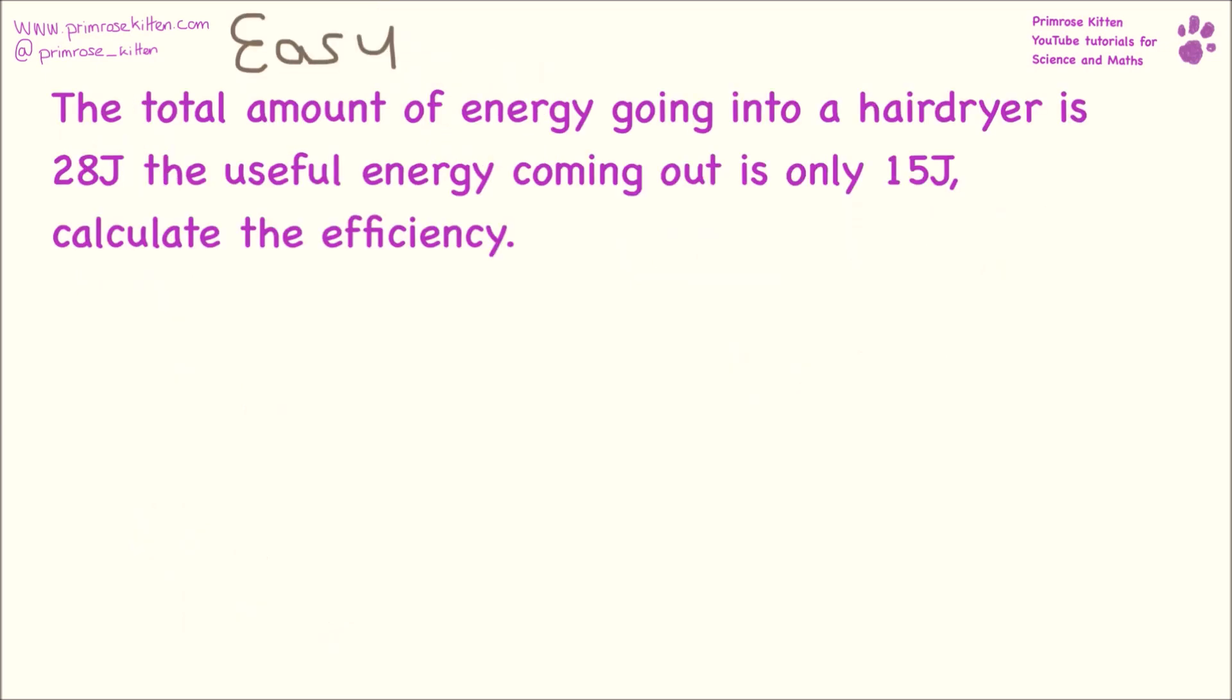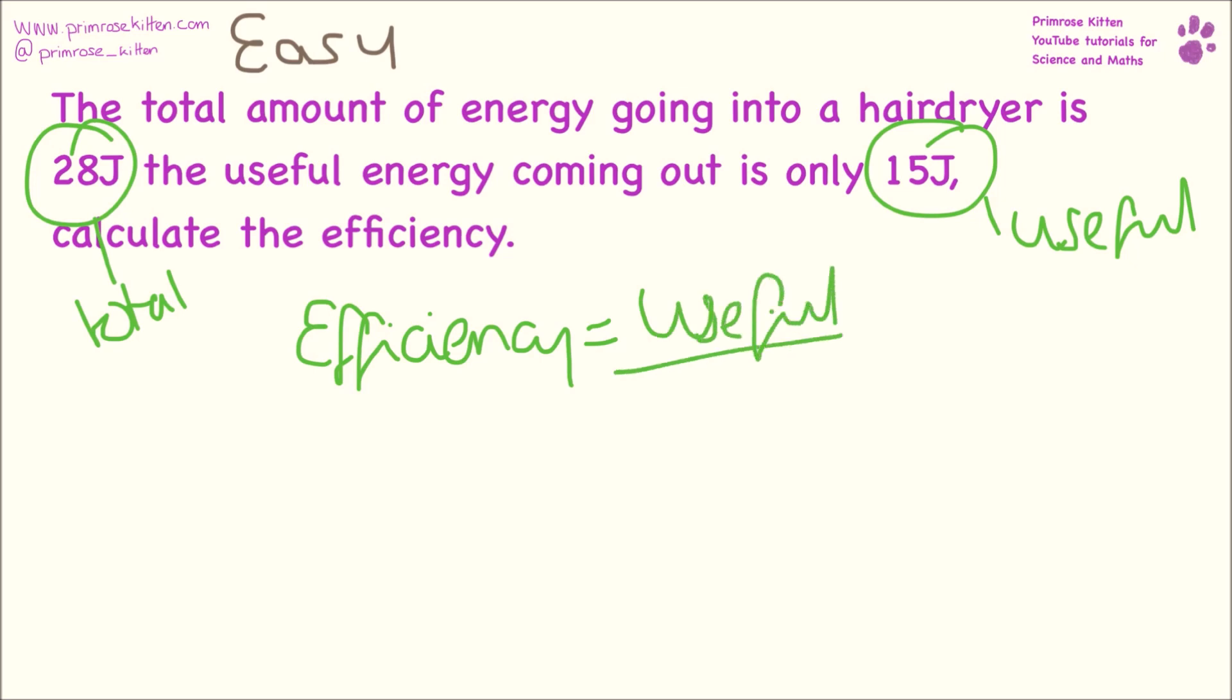For these examples, I'm going to follow my rules for answering math questions. If you're not familiar with those, check out my video on how to answer basically any question in math. Total energy going into the hairdryer is 28, so that's our total. The useful energy coming out is 15, that's our useful. We have efficiency equals useful over total. Efficiency equals 15 over 28, which equals 0.54. You can leave that as a decimal or convert it to a percentage, depending on what the question is asking.